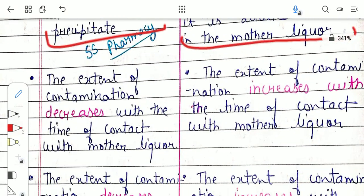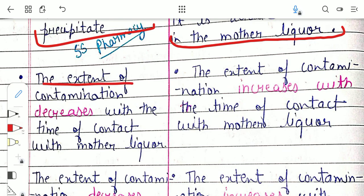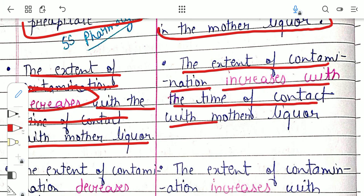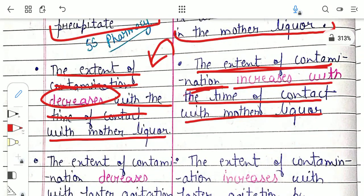The second difference: in co-precipitation, the extent of contamination decreases with the time of contact with the mother liquid. In post-precipitation, the extent of contamination increases with time of contact with the mother liquid. This is very obvious — the longer the precipitate is allowed to stand in the mother liquid, the more impurity gets deposited on it, so the greater the extent of post-precipitation contamination.